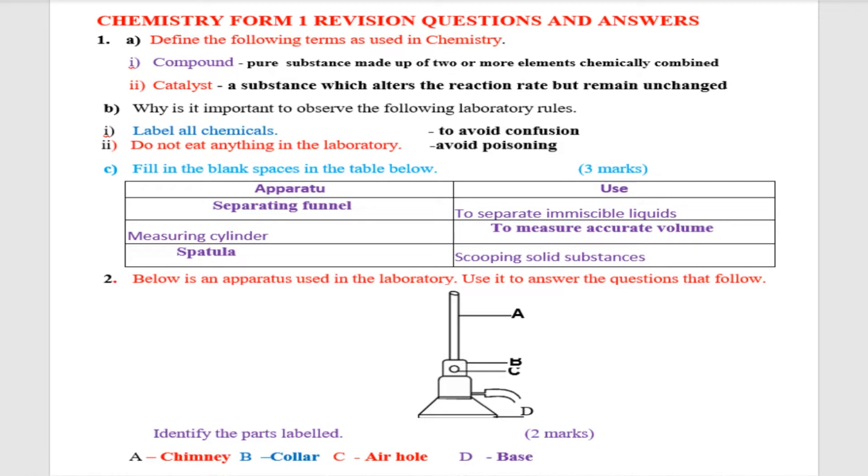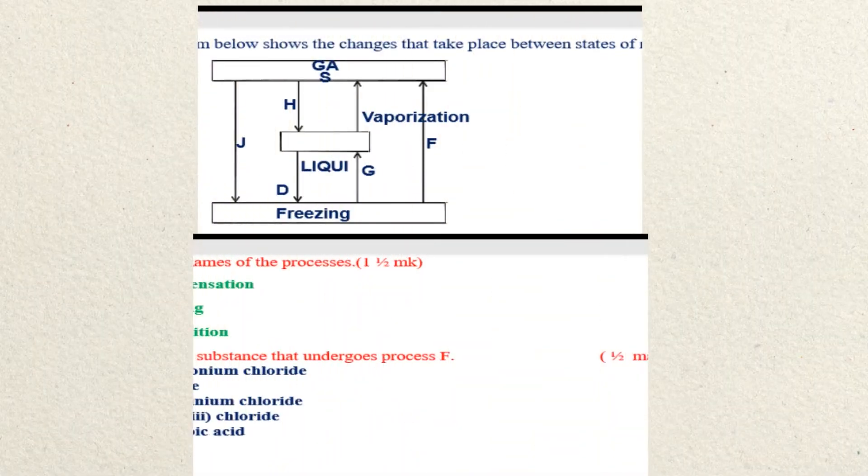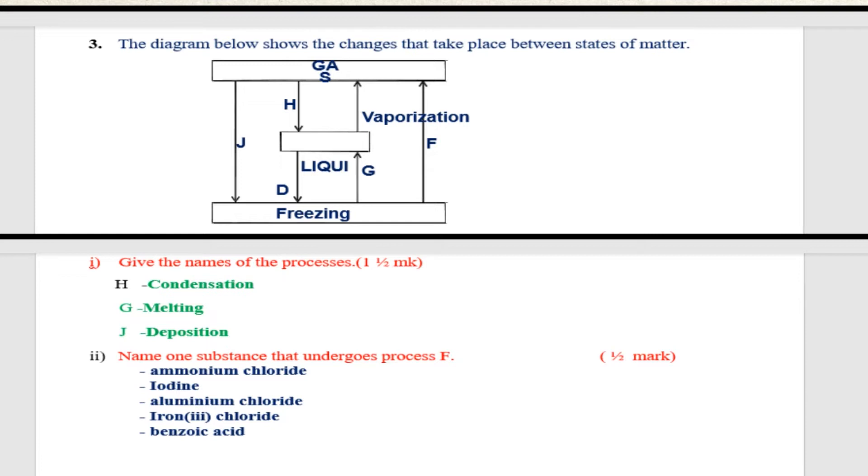Question number three. You are told the diagram below shows the changes that take place between states of matter. At the top we have gas. Let us start from the bottom. We have freezing, we have liquid, we have process going on, and those processes are named H, G, D, F.